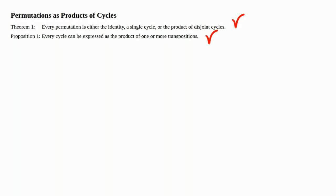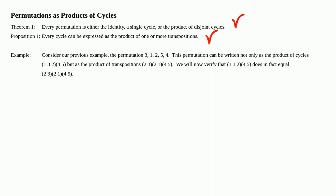We're going to continue our discussion of permutations as products of cycles with an example. Consider our previous example, the permutation (3, 1, 2, 5, 4). This permutation can be written not only as the product of cycles (1, 3, 2) and (4, 5), but as the product of transpositions (2, 3) and (2, 1) and (4, 5).